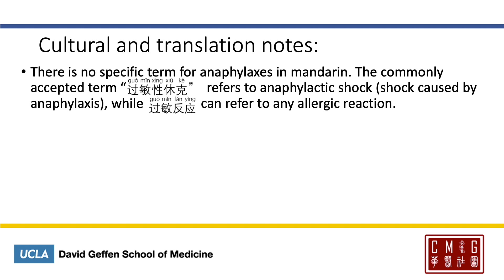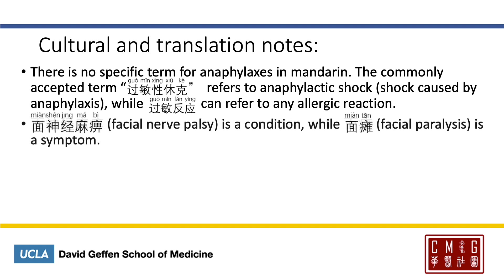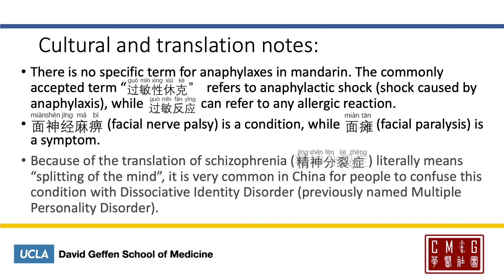Beware of the difference between facial nerve palsy and facial paralysis. The former is translated as 面神经麻痹 and is the condition, whereas the latter, 面瘫, is the symptom. For example, 面瘫 can also be a symptom of a stroke. Lastly, the translation for schizophrenia — 精神分裂症 — literally means splitting of the mind in Chinese. So it's very common to confuse it with dissociative identity disorder, also called multiple personality disorder.